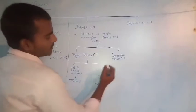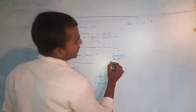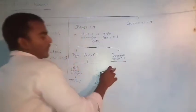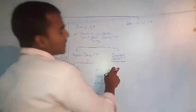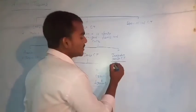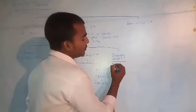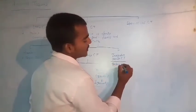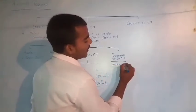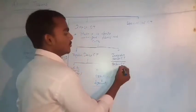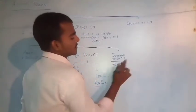Irregular dense connective tissue has fibers and cells arranged irregularly. These are present below the skin and will be discussed in detail in an upcoming lecture.